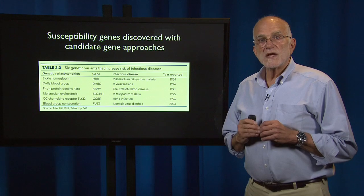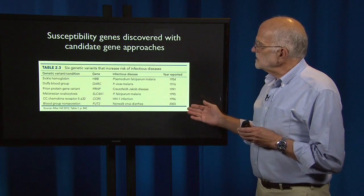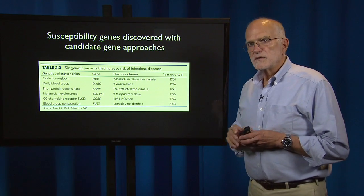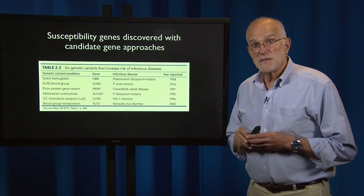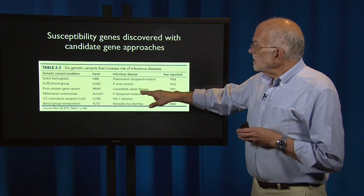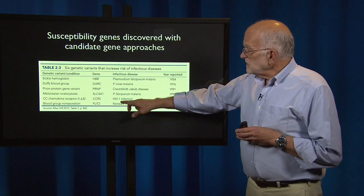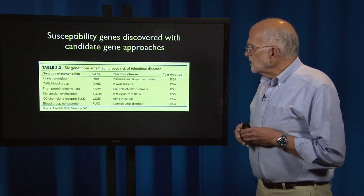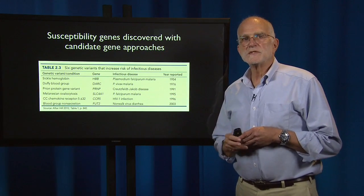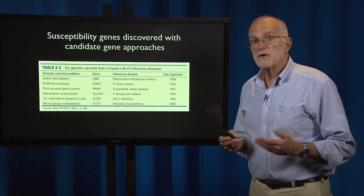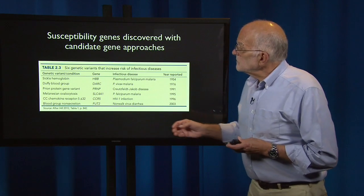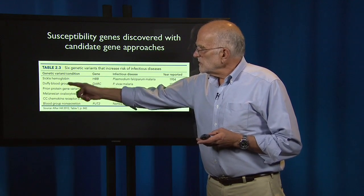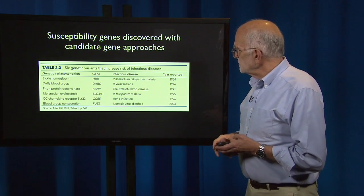Some of the susceptibility genes discovered with candidate gene approaches relate to major diseases. Out of a list of six genes that have been identified, four of them relate to malaria — a real signal of how important a selective agent malaria has been in the recent human past. Another is for Creutzfeldt-Jakob disease, a prion disease. Another is for HIV-1, the virus that causes AIDS, which involves a receptor called CCR5. And another is for Norwalk virus diarrhea — not surprising, since diarrhea is one of the major causes of infant mortality on the planet. These genes and their associated variants were discovered between 1954 and 2003.